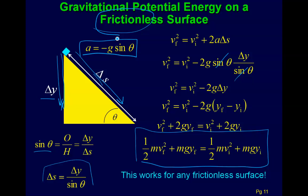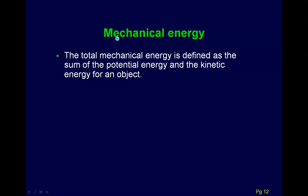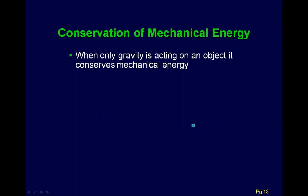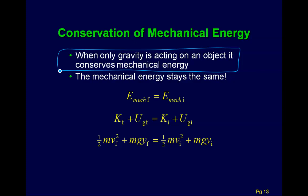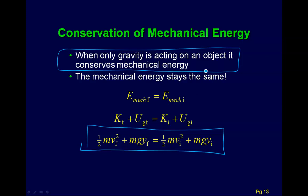This equation works for any frictionless surface or any path the object might take. We define this as the mechanical energy, which is the sum of kinetic plus potential. We use this so much that we'll often drop the word 'mechanical,' but it is important. When only gravity is acting on an object, mechanical energy is conserved — the mechanical energy stays the same. This equation is only valid when friction is not involved; no air friction and no surface friction — only gravity is allowed.